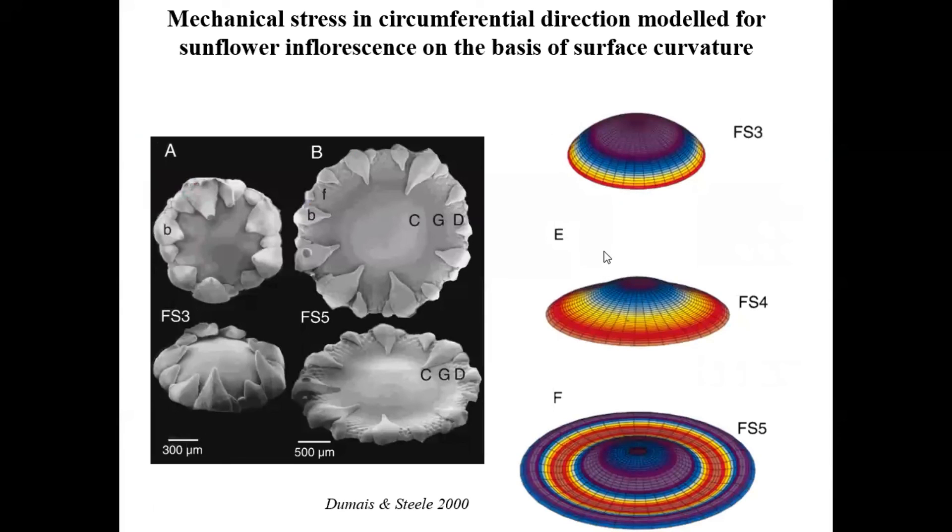Another example is that Gaussian curvature can be used to compute mechanical stress in the meristem surface, like it has been modeled for the sunflower inflorescence. And it shows that mechanical stress can contribute to the regulation of morphogenesis.